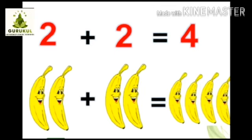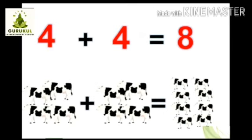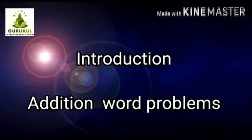If we count all together we get 4 bananas. Next sum is 4 cows plus 4 cows — how many cows? We need to count all the cows together. Counting: 1, 2, 3, 4, 5, 6, 7, 8 cows all together. So when we count all together we get 8 — answer 8 cows in all.